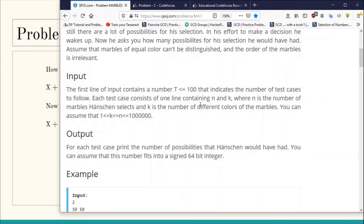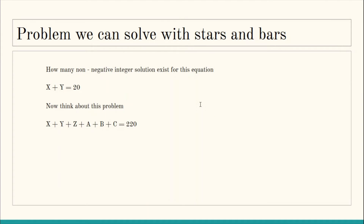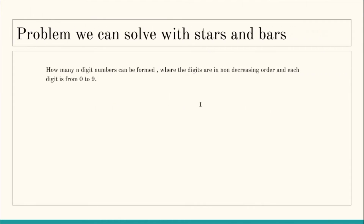The second kind of problem Stars and Bars targets is: count the total number of n-digit numbers you can form using digits 0 to 9 where the digits are in non-decreasing order. For example, with n = 3, '012' is valid, '022' is valid (non-decreasing), but '032' is invalid because the digits are not in non-decreasing order. You have to count how many such n-digit numbers can be formed.